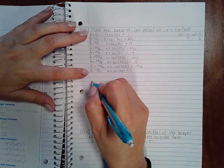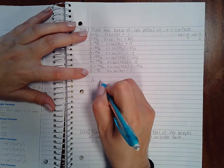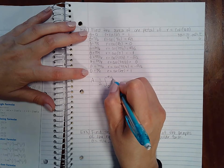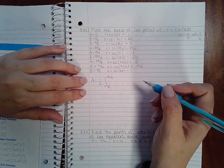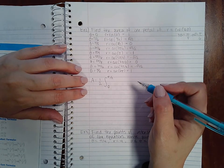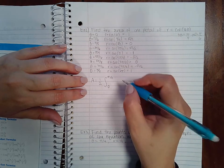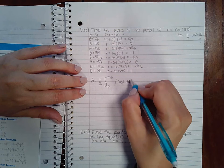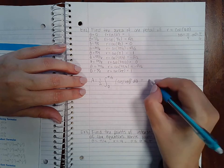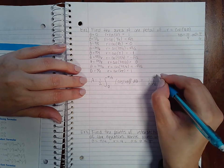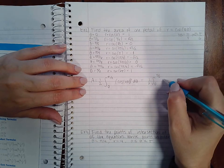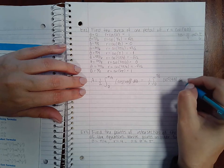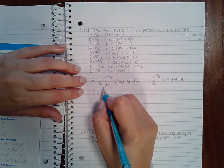So that means when I set up my interval, it's going to be 0 to pi over 2 to get the entire area of that petal. And so then I'm going to do r squared, so I get 1 half from 0 to pi over 2 cosine squared of 4 theta d theta.